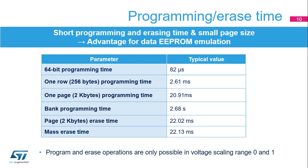The programming time of a row is equal to 82 microseconds multiplied by 32 double words. The programming time of a page is equal to 82 microseconds multiplied by 256 double words. The mass erase time, meaning a 512 kilobyte erase operation, takes approximately the same time as a page erase.